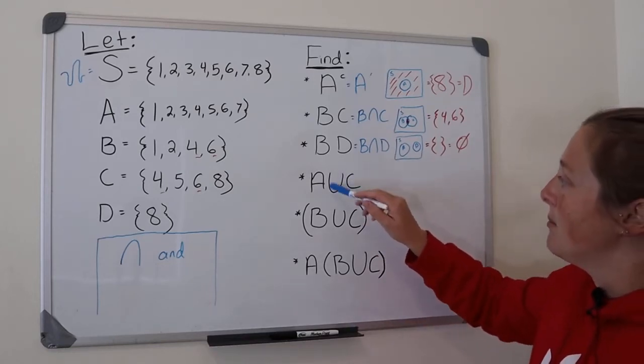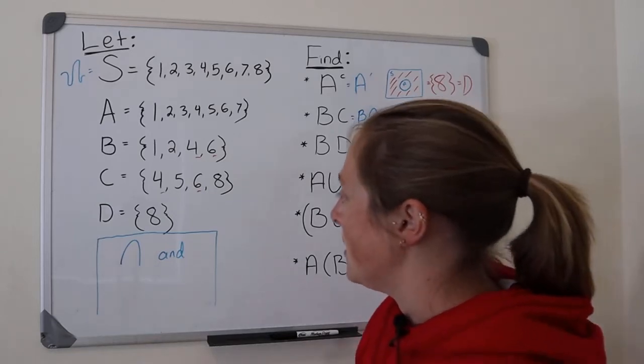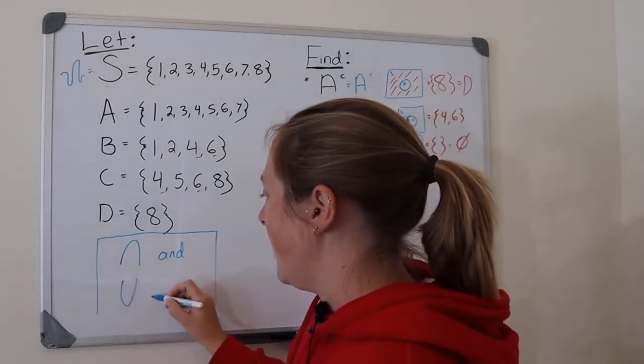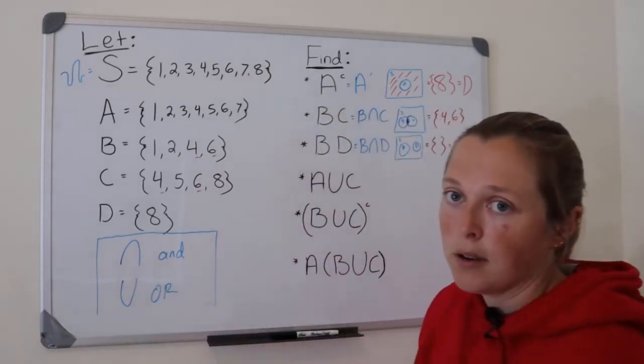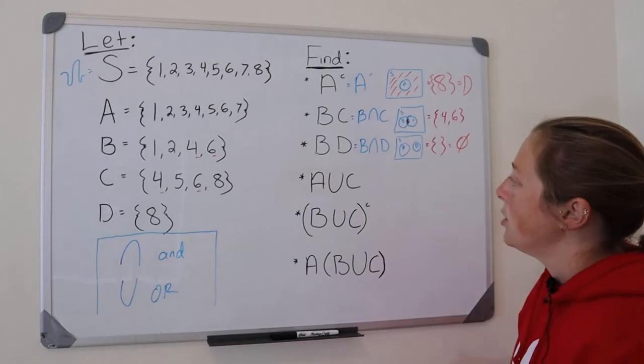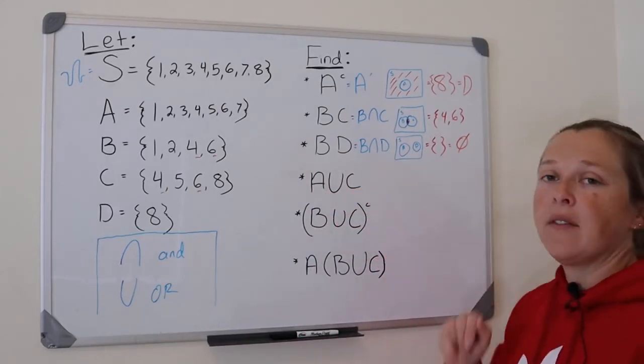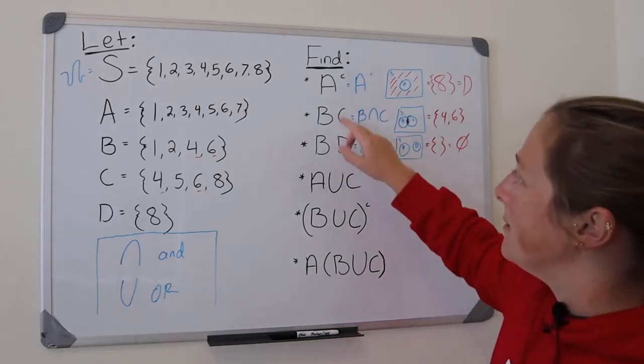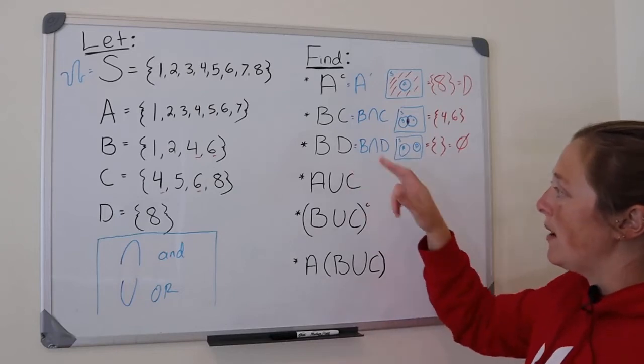Now this is a new symbol. It means union. This U means union. Union, and union means or. Okay, so you have union. Whenever you have union, you always write the union sign. You cannot omit it like you can with intersection.